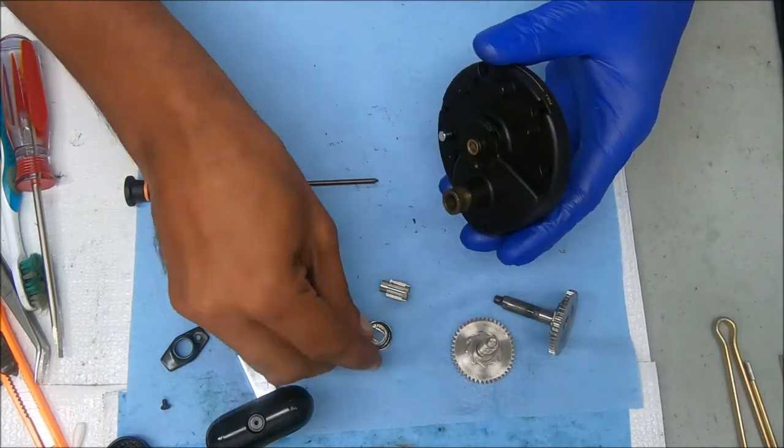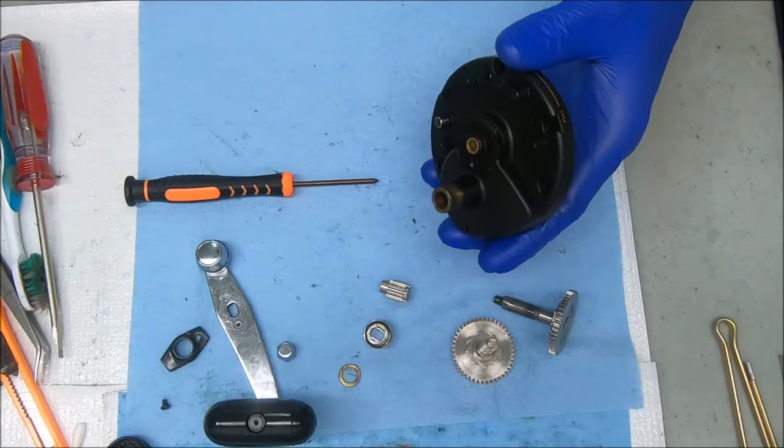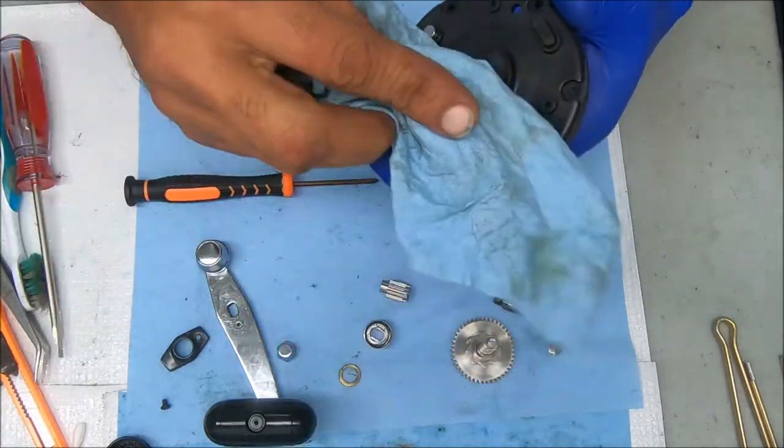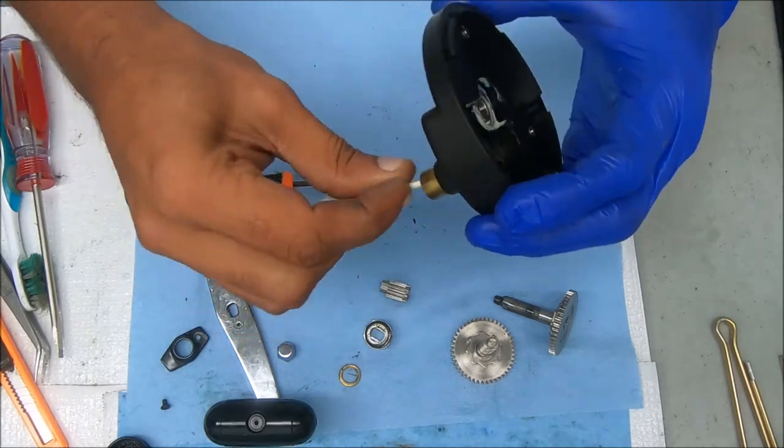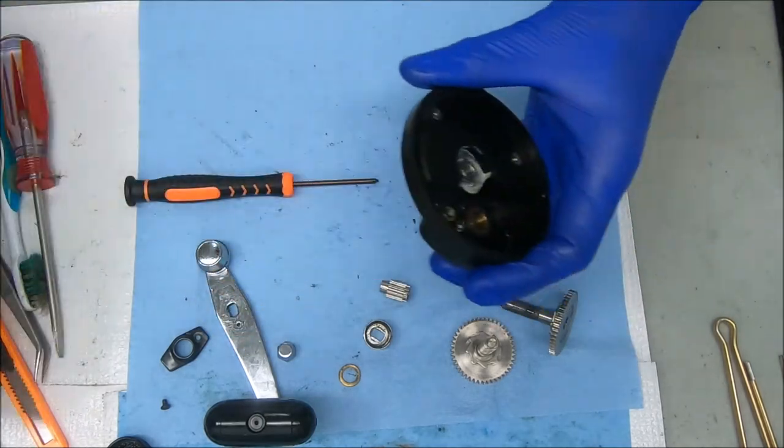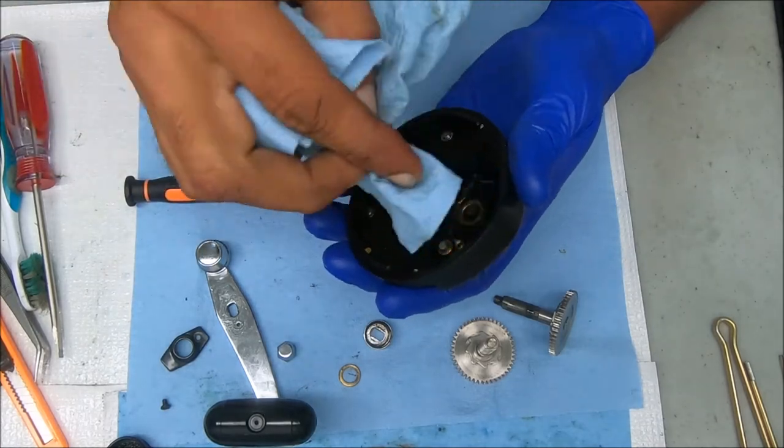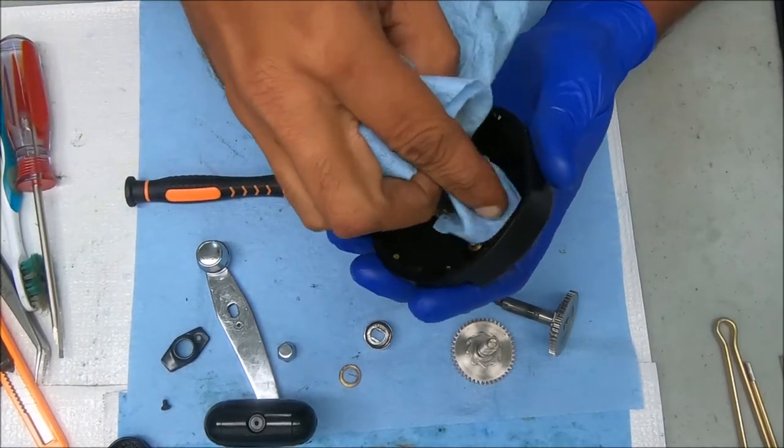All right, it comes off like this. I'm going to take that, and then we have a washer under there. The bearings are all good, so we're going to leave that alone. We're just going to wipe off or clean off the other parts.